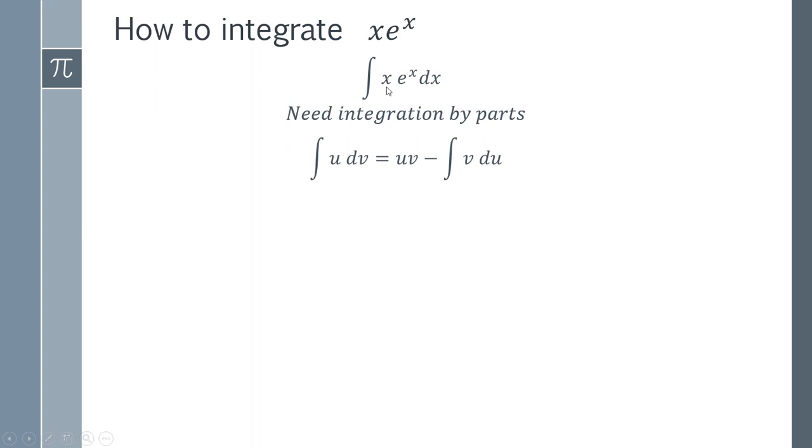So we're going to have to choose one of these functions to be u and choose one of these functions to be dv. And we want to do it in such a way that we're going to get something that's going to become simpler.